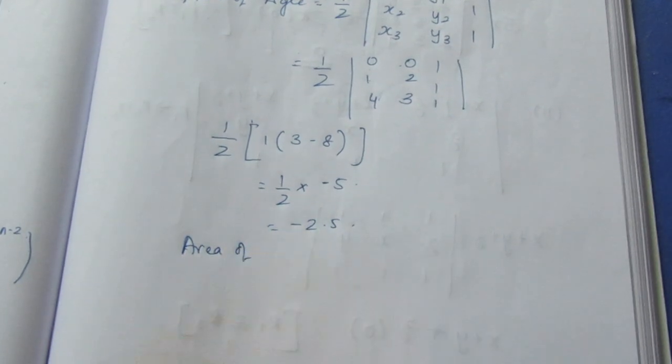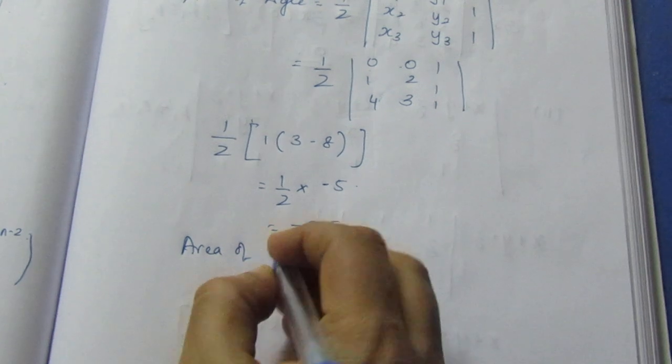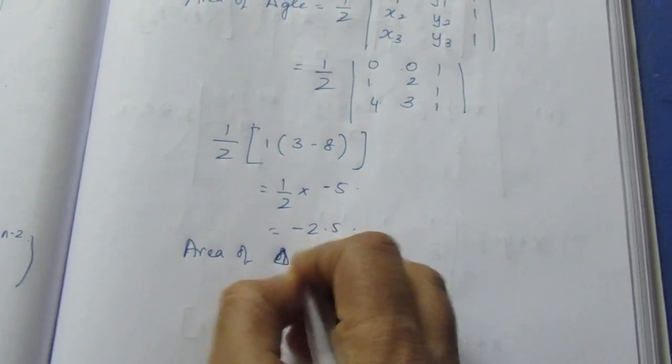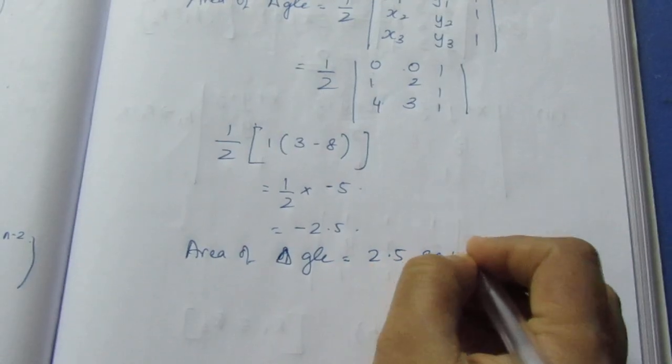If you look at the area of a triangle, we cannot have negative area. The area of a triangle is positive. So the area of the triangle is equal to 2.5 square units.